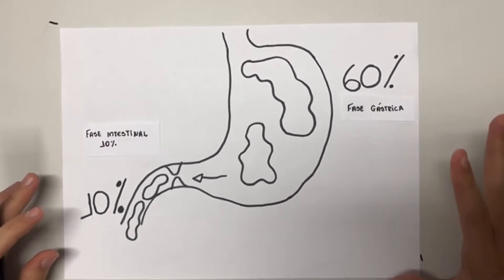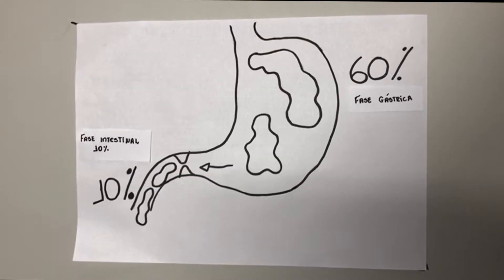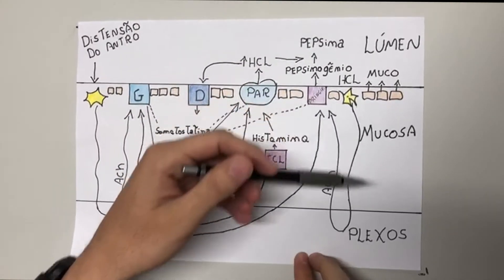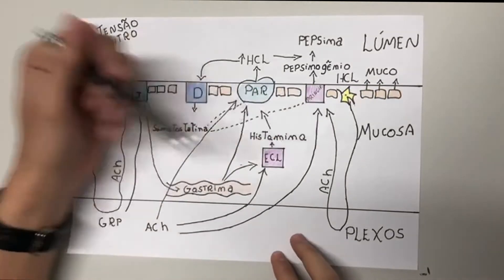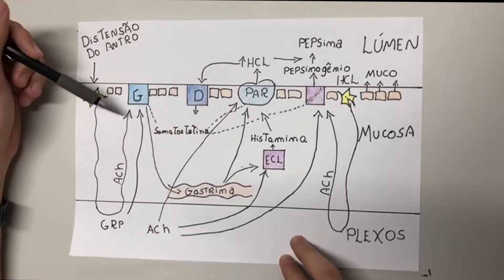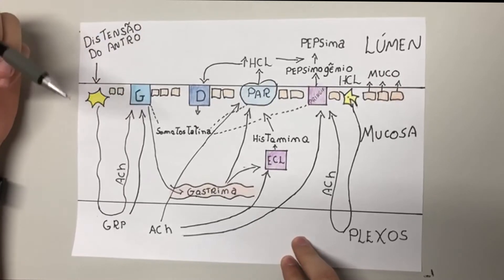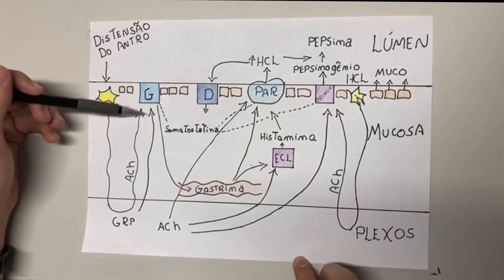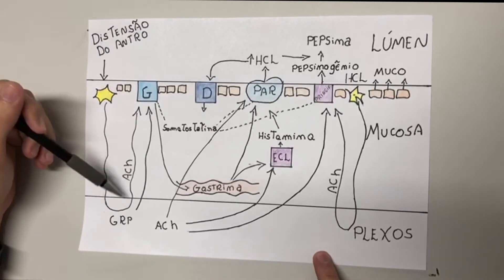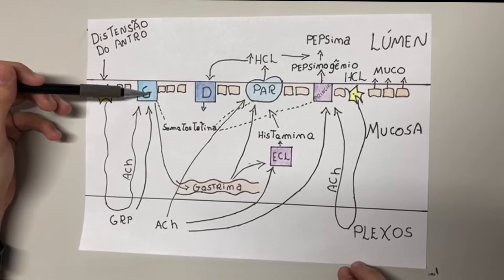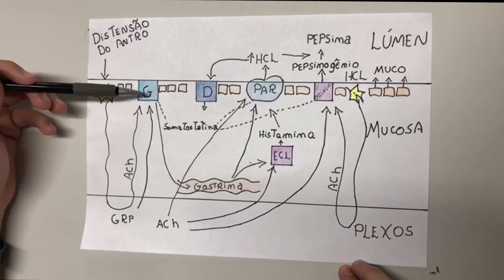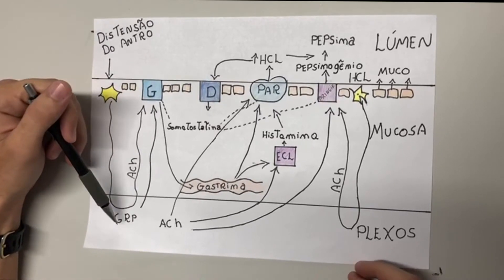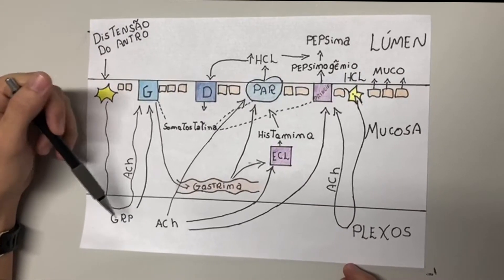A regulação detalhada da secreção gástrica envolve o lúmen, a mucosa e os plexos. A distensão do antro ou a presença de proteínas estimula neurônios sensitivos que enviam informação para os plexos mioentéricos. Os plexos respondem liberando acetilcolina, que vai estimular a célula G. Ela também pode ser estimulada pelo sistema nervoso autônomo parasimpático mediante a liberação do neurotransmissor peptídeo liberador de gastrina (GRP). Ao estimular a célula G, ocorre a secreção de gastrina, que, por ser um hormônio, não é secretada para o lúmen, mas sim para a corrente sanguínea.